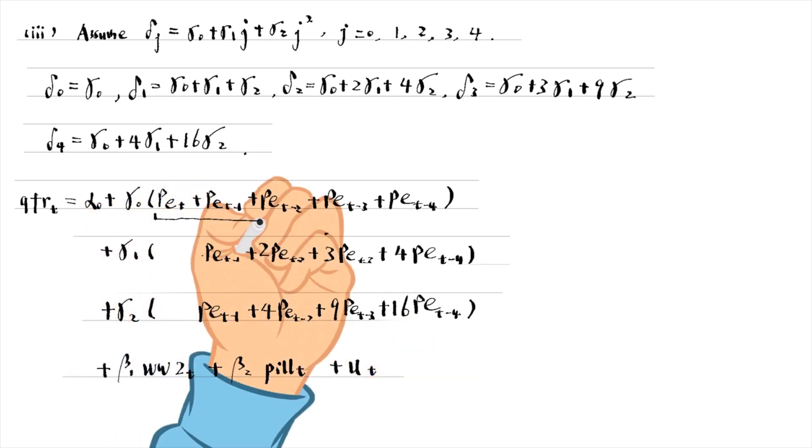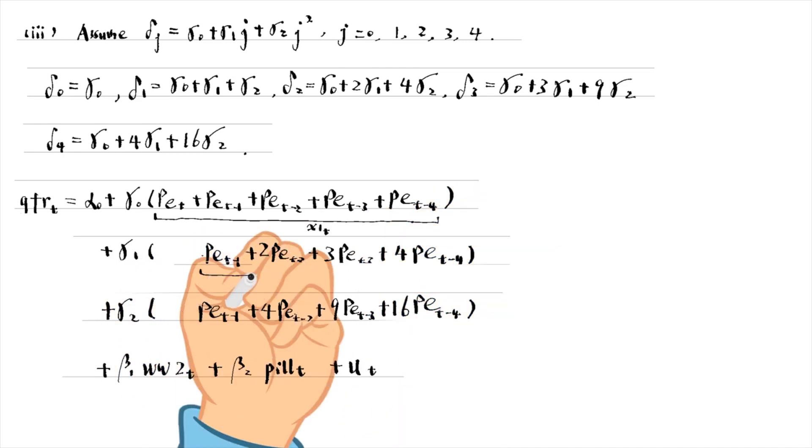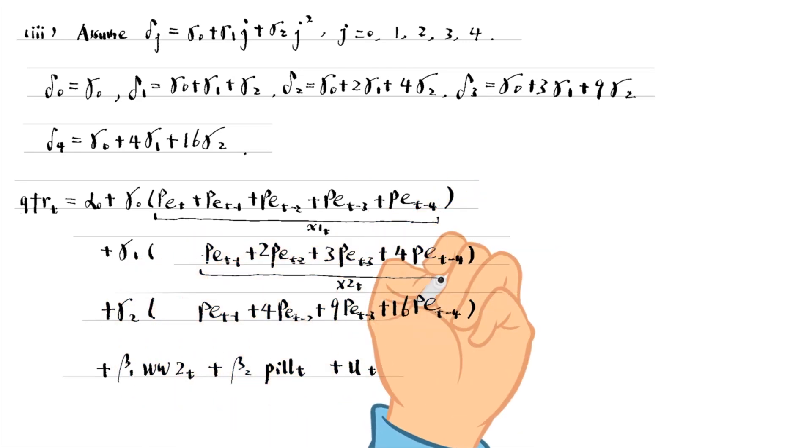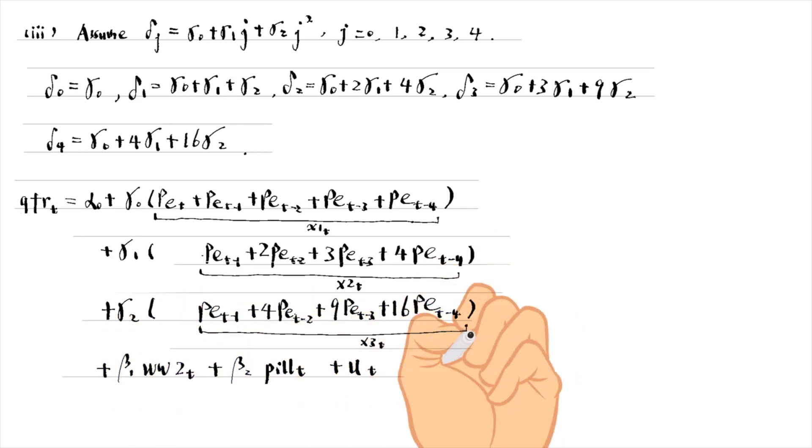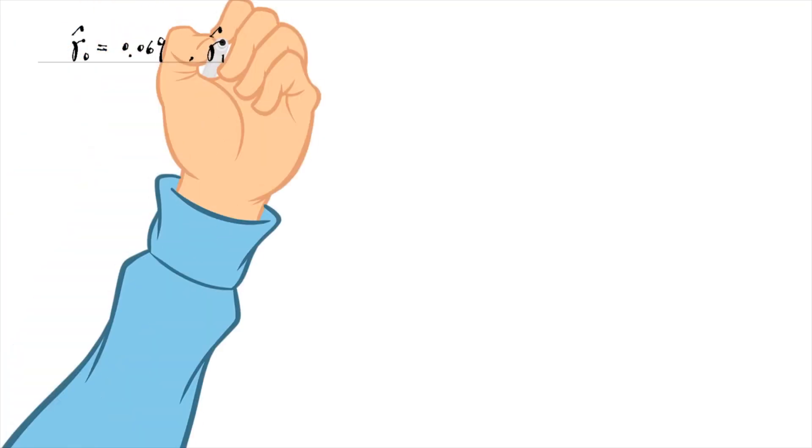We can regress the fertility rate on new variables x1t, x2t and x3t and the two dummies ww2t and pwt. We obtain the estimates for the gammas.